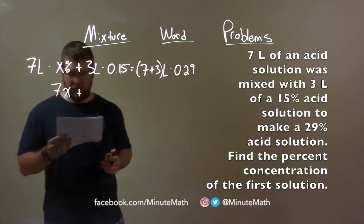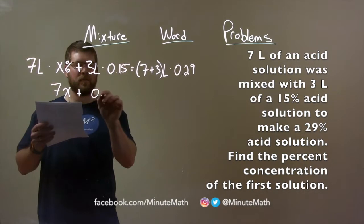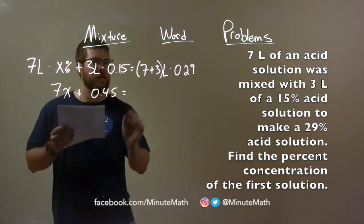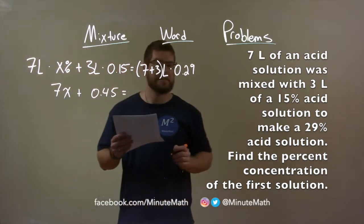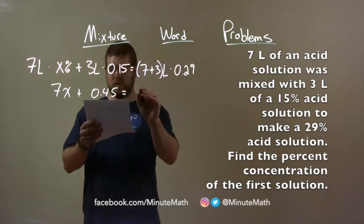7x plus 3 times 0.15 is 0.45, and 7 plus 3 is 10, multiply that by 0.29 is 2.9.